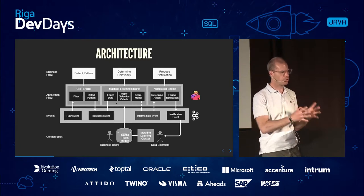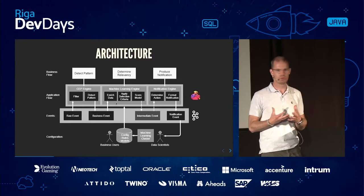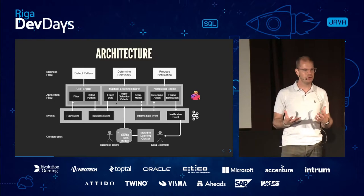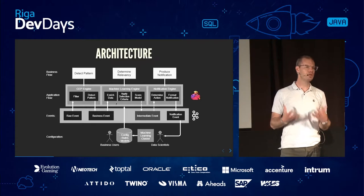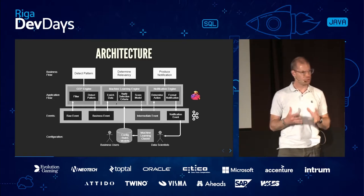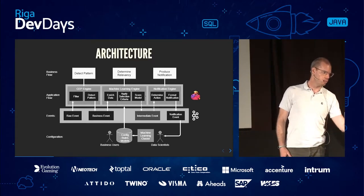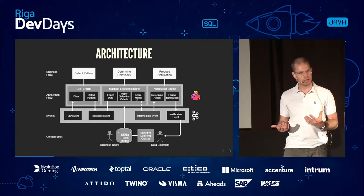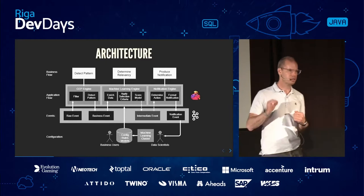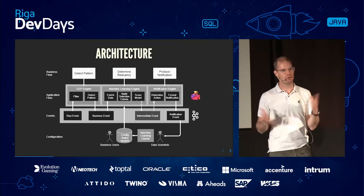With the event data combined with customer data, we can first apply simple selection criteria — business rules. But the interesting step is determining the actual relevancy for this particular individual using a machine learning algorithm, which can be trained to keep improving. What you give the ML algorithm is the feature set of customer data combined with event data. What comes out is a score — from zero to one, where one means 'yes, produce this notification,' 'yes, block the transaction,' and zero means no.